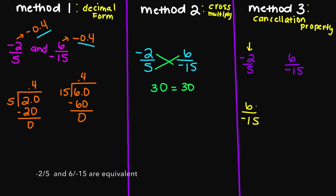However, if I look at my 6 over 15, we know that we can simplify this. My numerator can be simplified into 2 times 3. And then my denominator, this can be simplified into 3 times 5. Notice here that the 3s are going to cancel out. And I am left with 2 over negative 5 in my denominator, which is the same as what we have here.